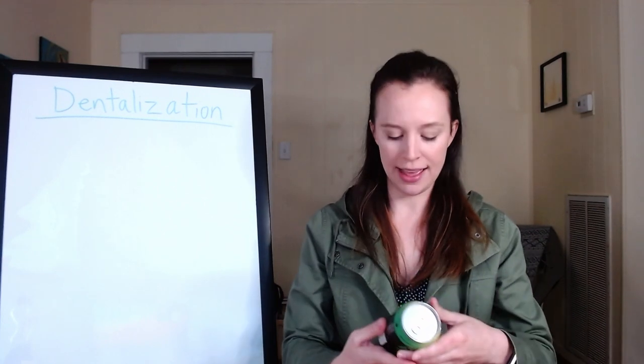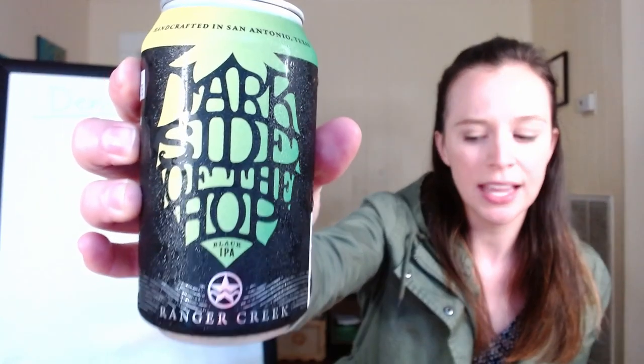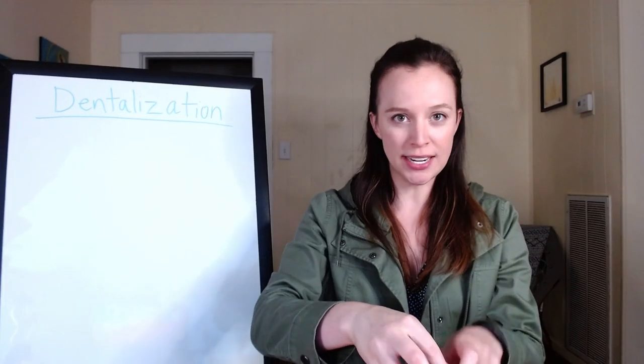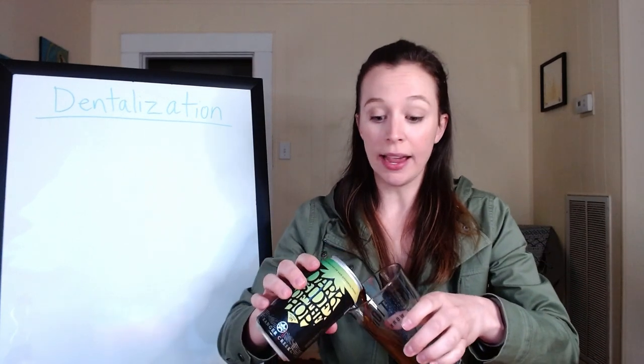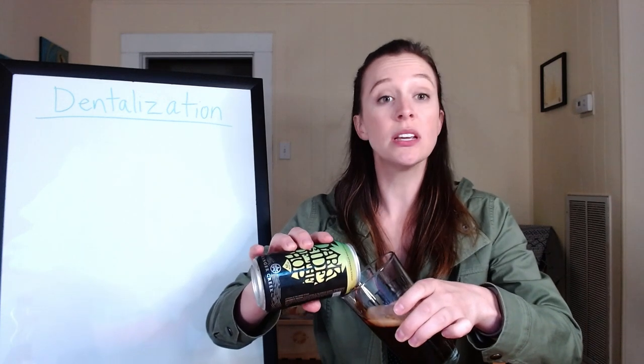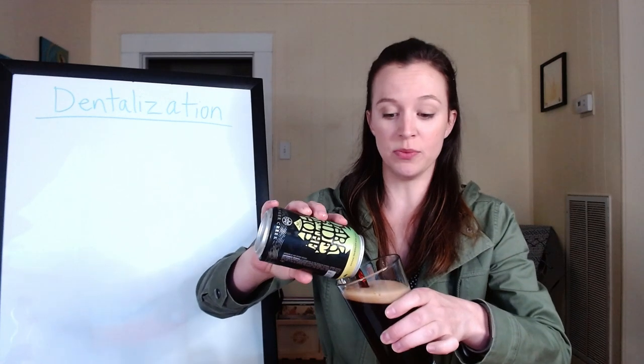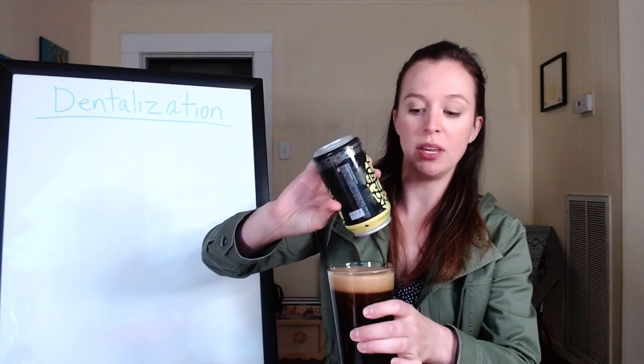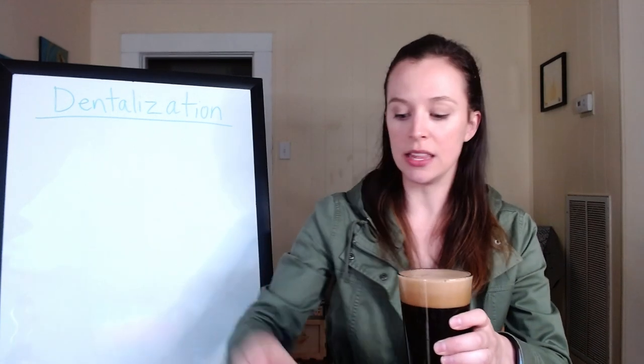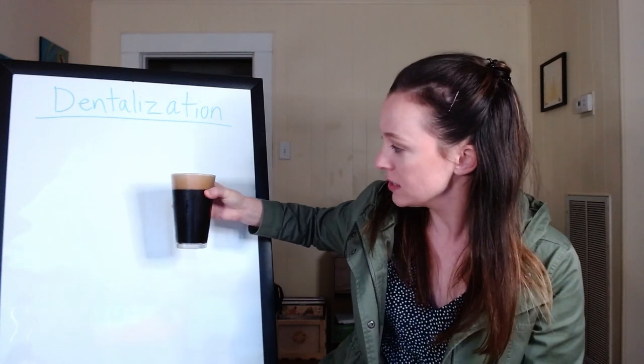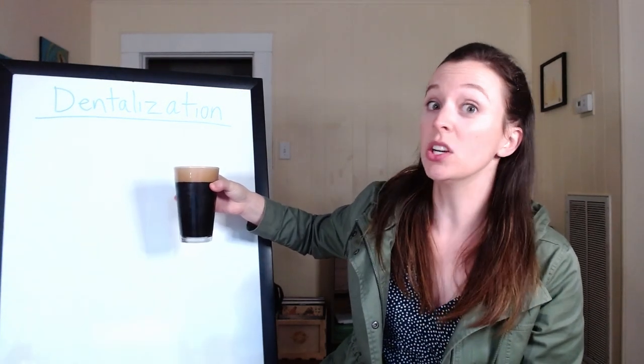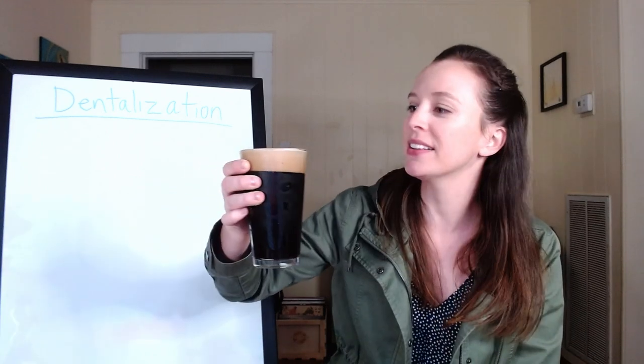Tonight I have the Dark Side of the Hop, which is a black IPA from Ranger Creek Brewing in San Antonio, Texas. I was reading about black IPA because I had never heard of it, and it is steeped in controversy. A black IPA is supposed to be a beer that is dark in color but has the taste, body, and aroma of an IPA. Look-wise, absolutely. This looks like a dark beer. Look at the head on that, that's beautiful.